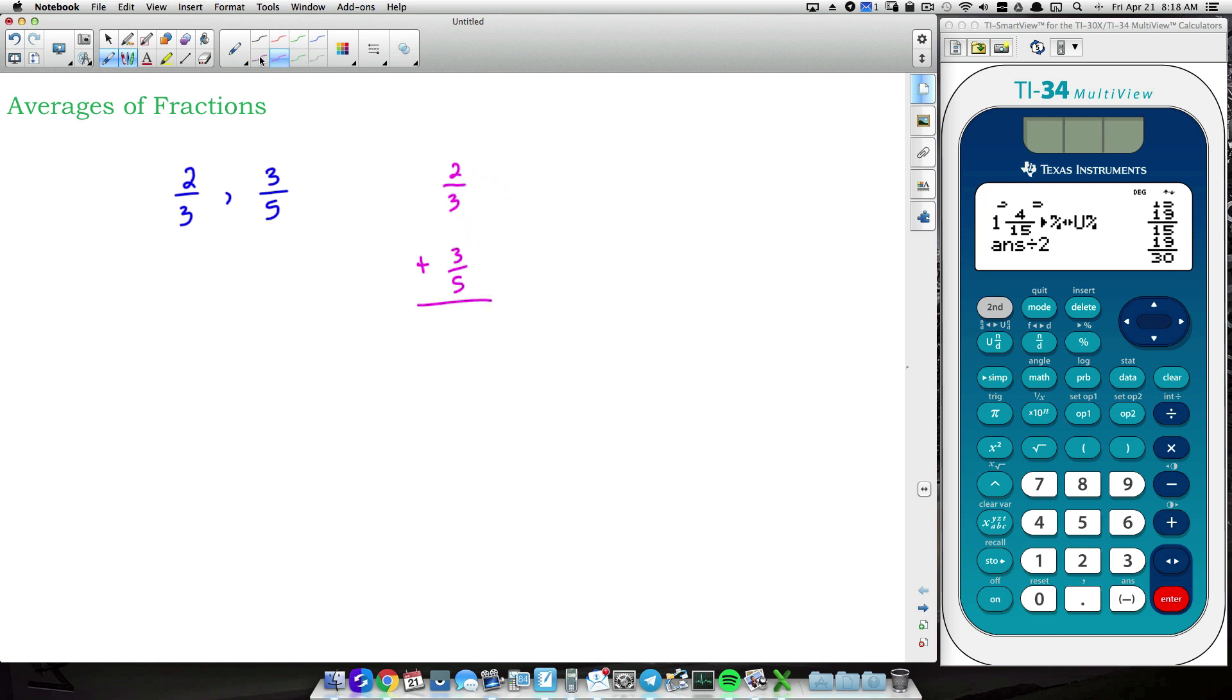Now I'm just going to do it in the vertical setup because we need to get common denominators in order to add these two fractions together. A common denominator, you can pick 15, you can pick 30, 45. Just find a number that 3 will multiply into and that 5 will multiply into. And the first one is going to be 15.